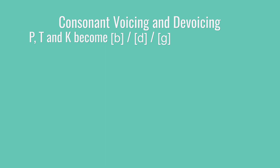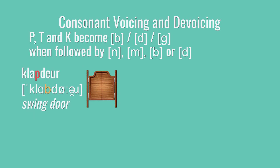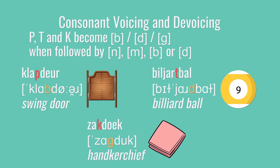The next spot where voicing becomes important has to do with what happens when you see a voiceless p, t, or k in the middle of a word, followed by a voiced nasal sound like an n or an m, or before a b or a d. When that happens, the p, t, or k is going to become voiced. They'll turn into b, d, or g, which you'll see in words like klapdeur, billiardbal, or zakdoek. It's not klapdeur, it's klapdeur. Not billiardbal, but billiardbal. And not zakdoek, but zakdoek.